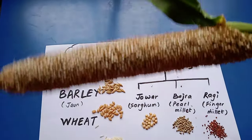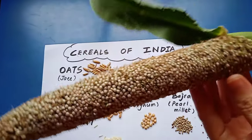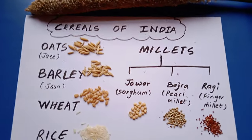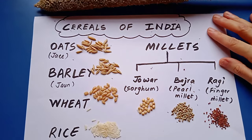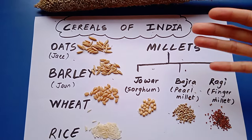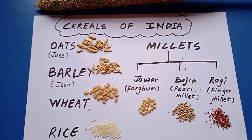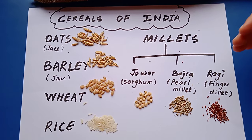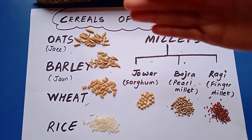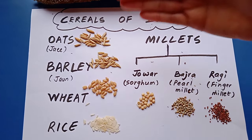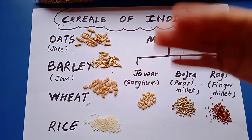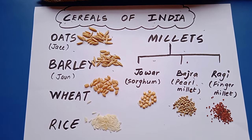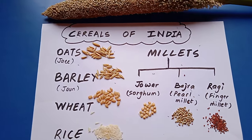Isn't it amazing to see the real Bajra growing on the structure? I hope students you have learned something new today. You have understood the difference between cereals and millets. You have recognized what is Jowar, what is Bajra and what is Ragi. Now you are aware of how oats look like, how barley looks like, and they are quite similar to wheat only. Thanks for watching everyone - keep learning, keep growing.